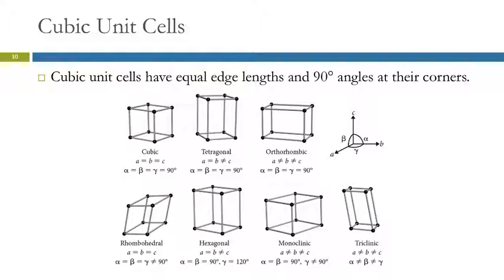There are all kinds of variations on that. You don't need to know all of these — this is just showing you what these terms mean, more for your interest. We're going to look at three cubic cells and one hexagonal cell.